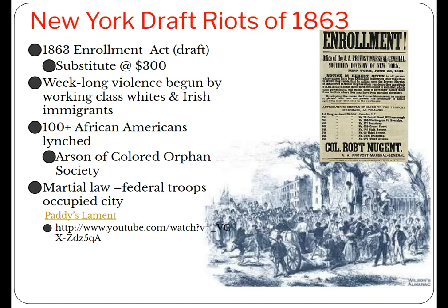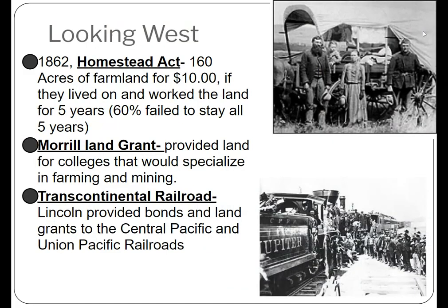More than 100 African Americans were lynched in New York City. A charity that existed for orphaned children of the free black population — the Colored Orphan Society — was burned to the ground, though luckily all the children inside were saved. For almost a month, New York City had to have federal troops occupy it and lived under martial law. Lincoln had challenges not only with the Confederacy but also internally in the Union, where many people were dissatisfied with the course of the war and wished to see it end sooner rather than later.